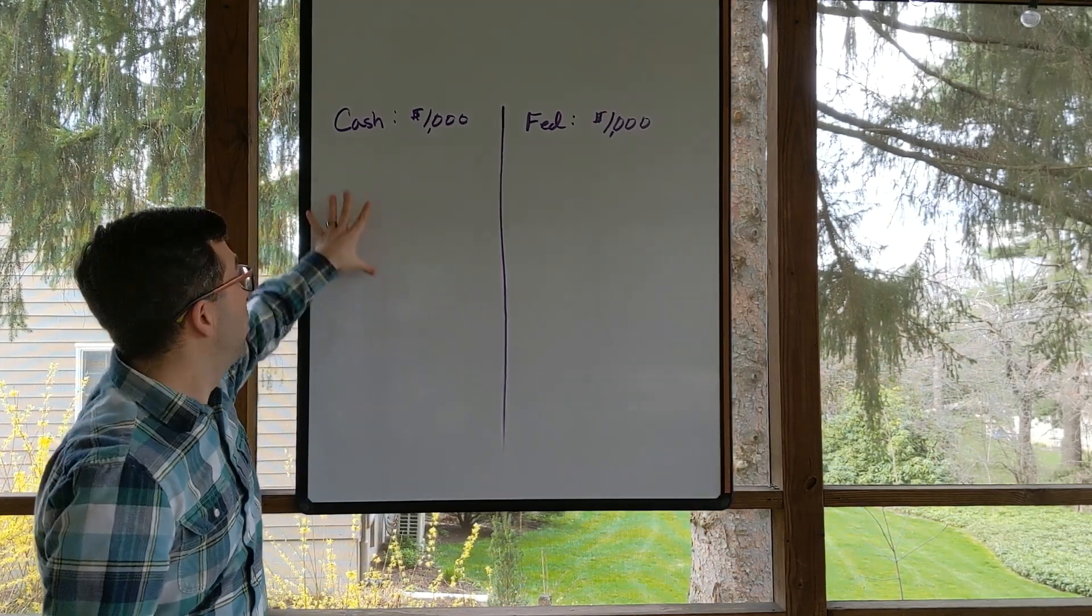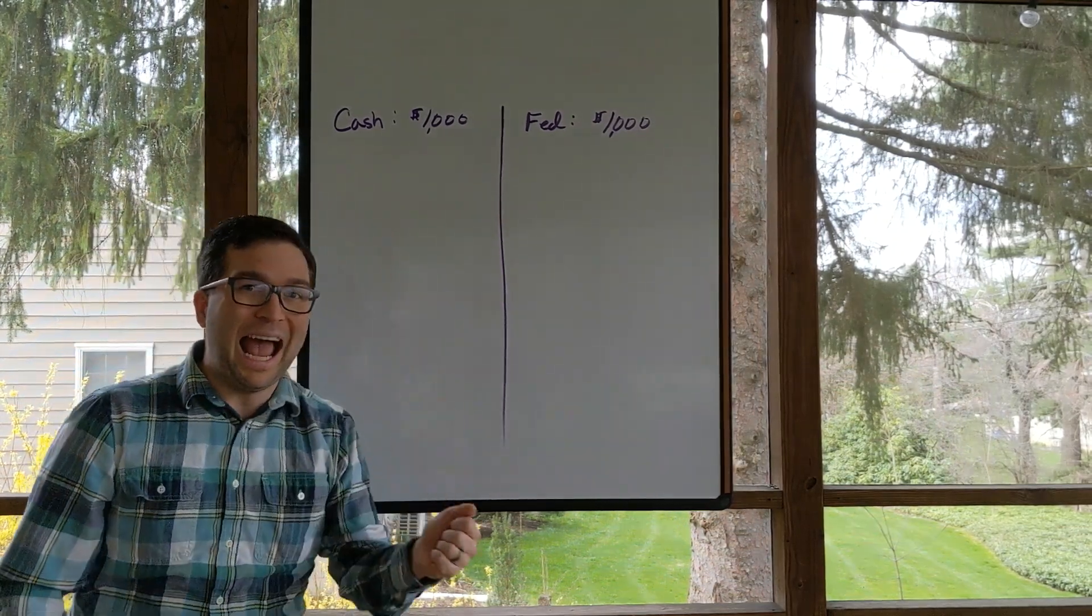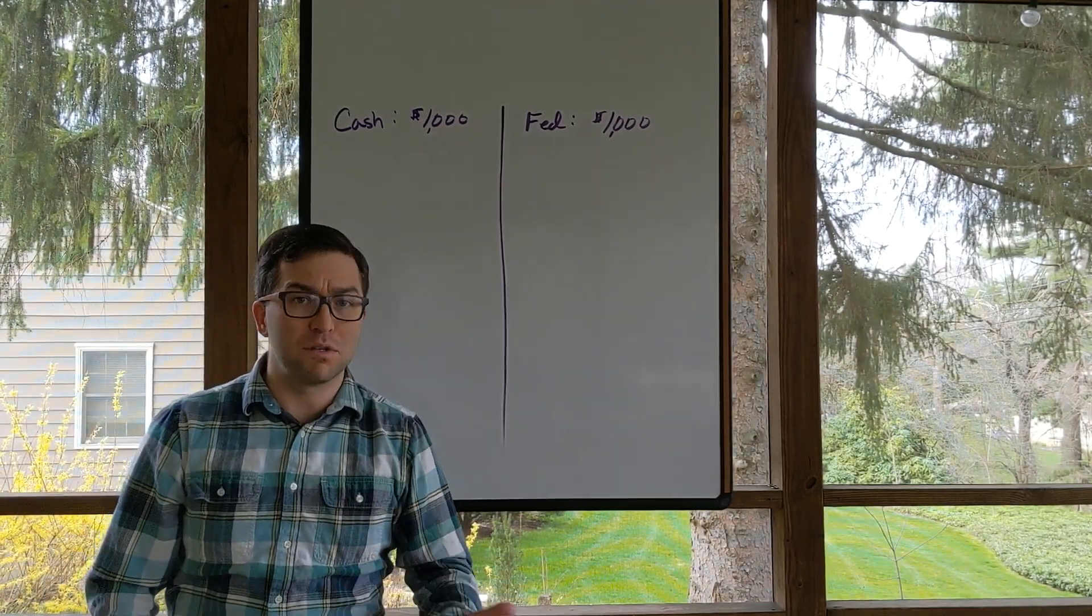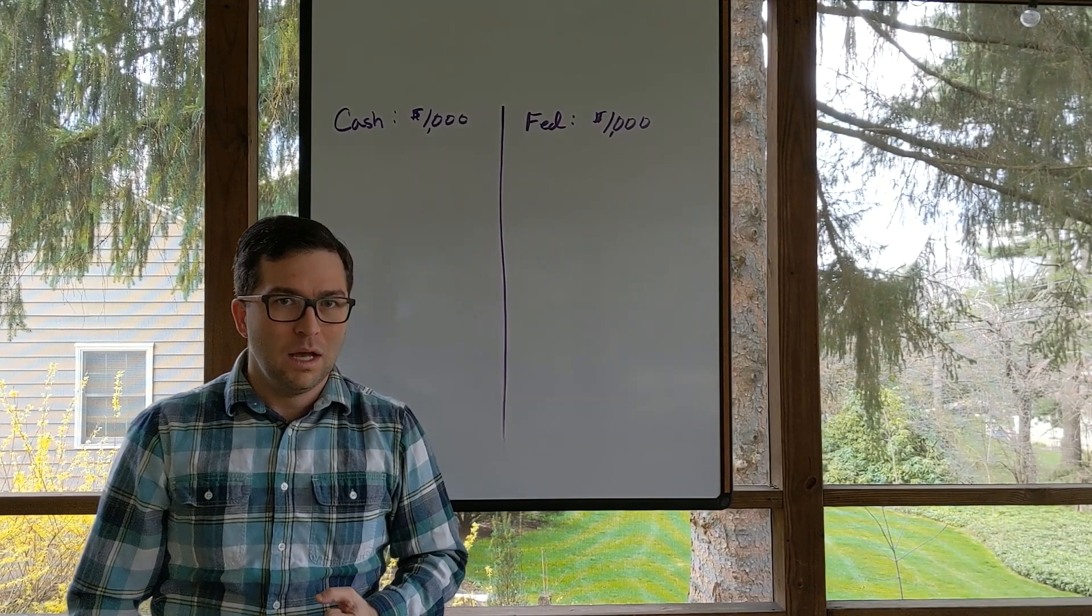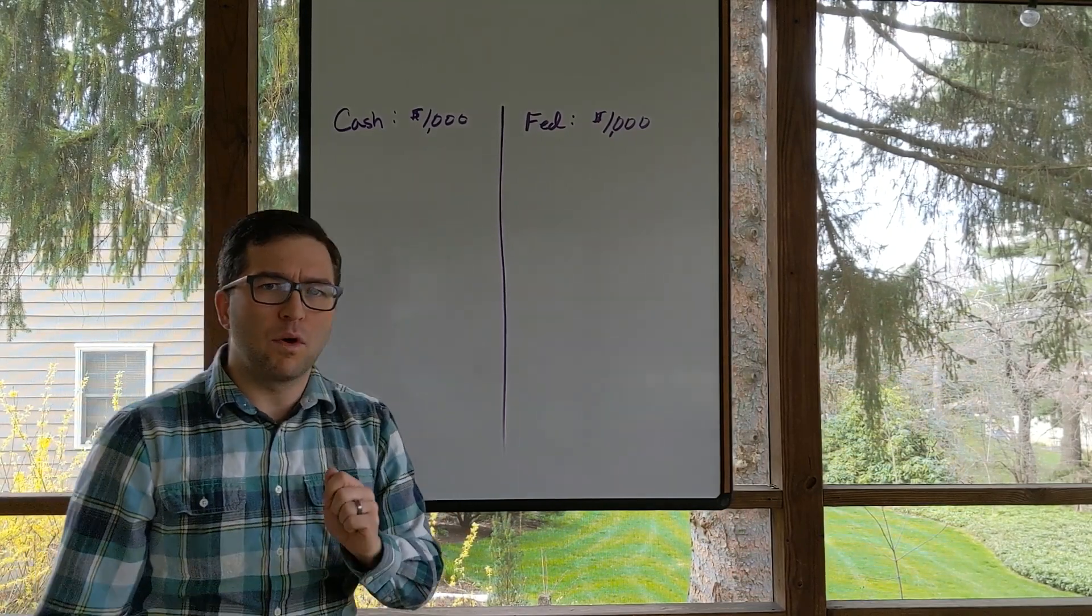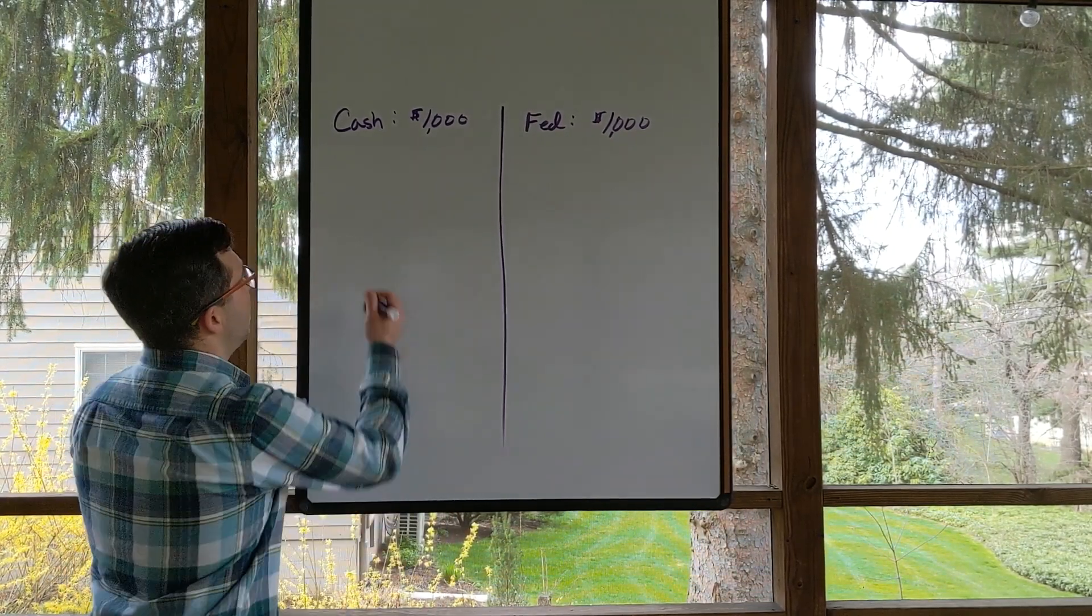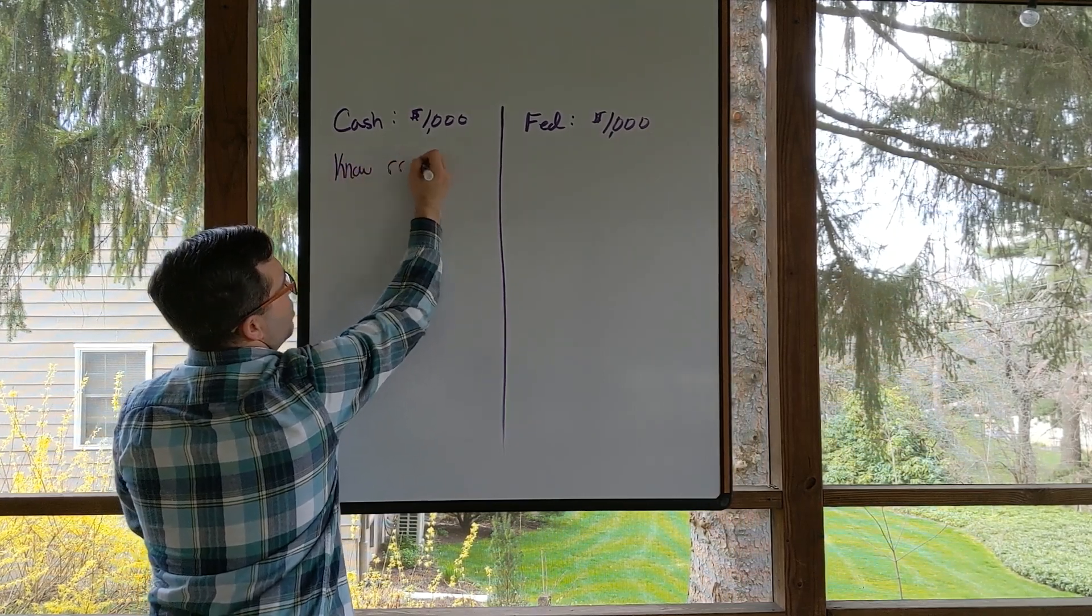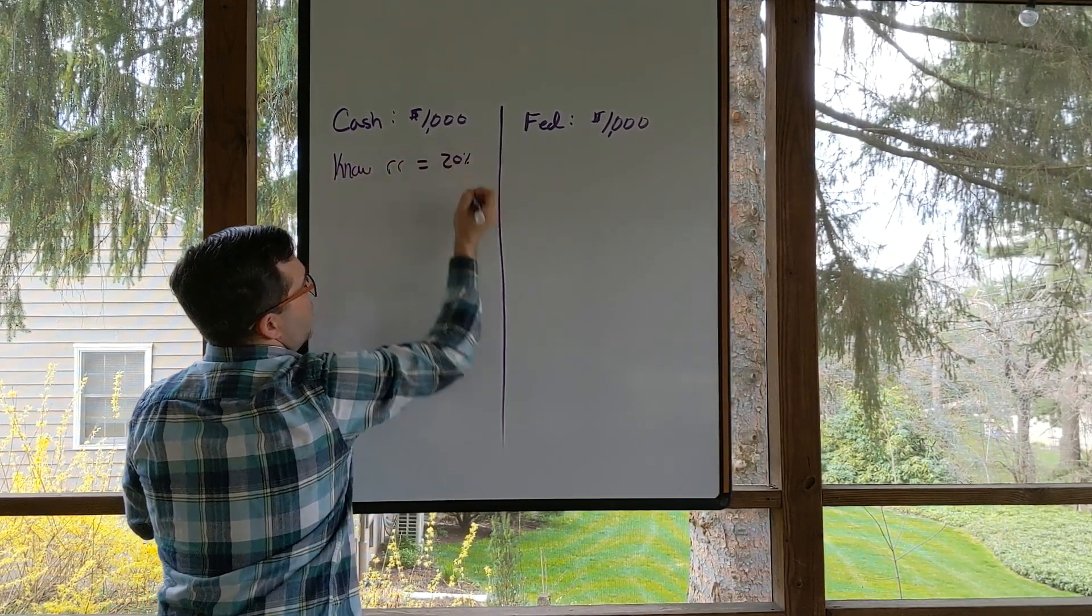Over here we're going to show if the initial deposit was a cash deposit. Over here the initial deposit is coming from the central bank or the Federal Reserve here in the United States. Let's assume that the required reserve ratio is 20 percent.